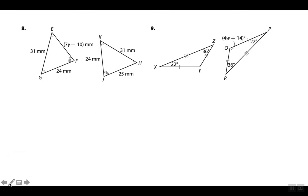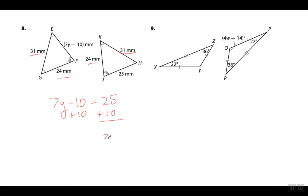24 goes with 24, 31 goes with 31, so this side goes with 25. Set up: 7y − 10 = 25. Add 10 to both sides: 35 = 7y. Divide both sides by 7: y = 5. You could have done that whole thing mentally if you know your times tables.